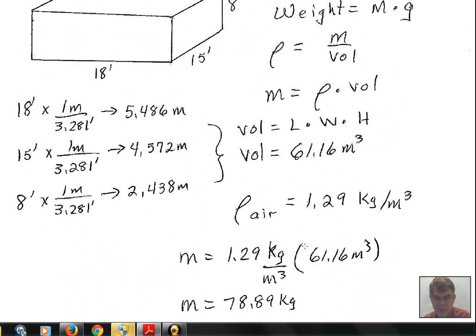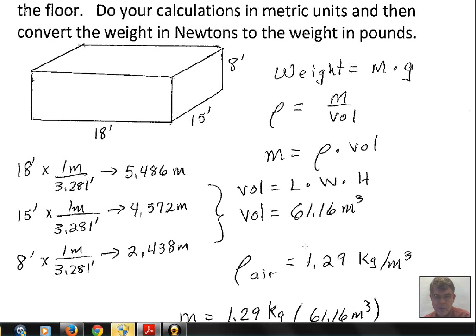We found this by taking advantage of the formula for density and realizing weight is mass times gravity. Rearranging the formula for density allows us to calculate the mass, density times the volume. We looked up the density in a table, the density of air, and we calculated the volume by converting the units of feet into meters for each dimension, length, width, and height.